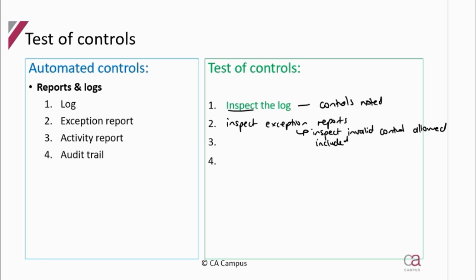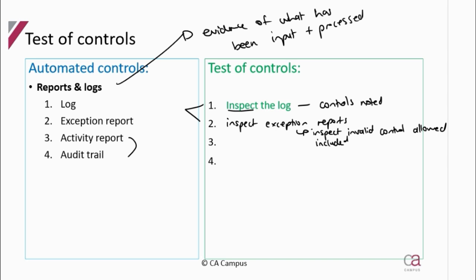Activity and audit trails provide sufficient evidence — if the question mentions an activity report or audit trail, you can inspect it, as these reports are evidence of what has been input and processed; they are not controls themselves. The distinction is: where you weren't allowed to do something but the control failed and you did it anyway, that should be on the exception report; where you weren't allowed and couldn't do it, that should be on the log; and where you were allowed and did it, that should also be on the log.